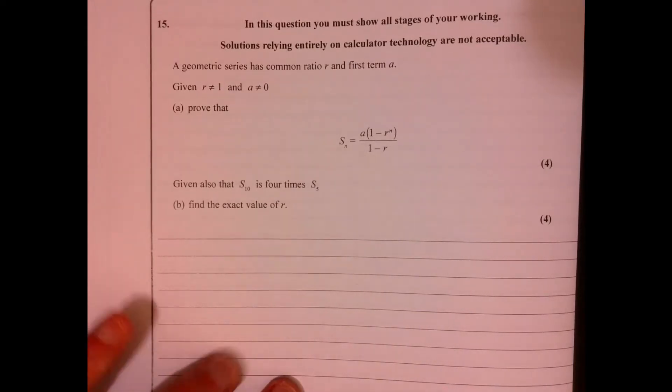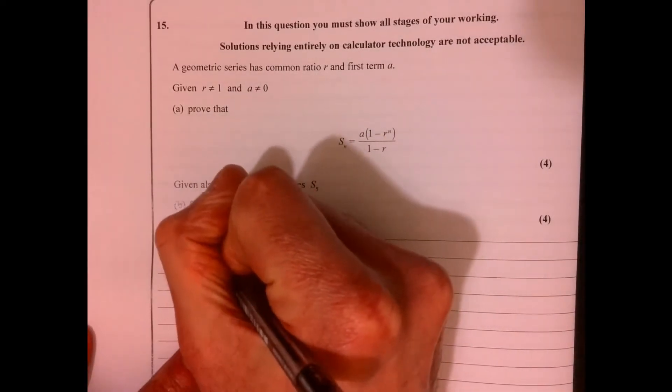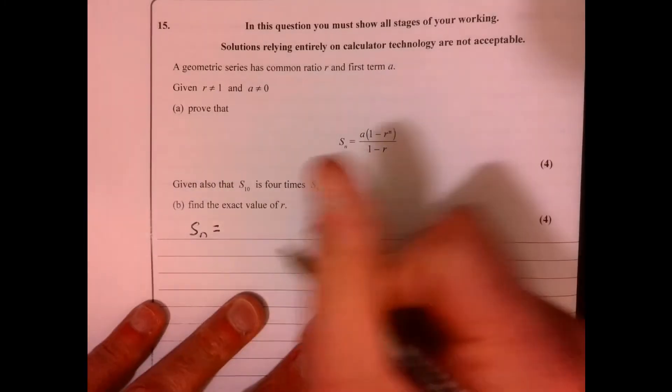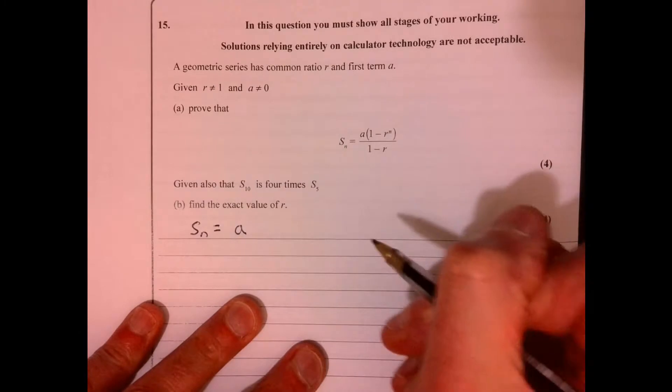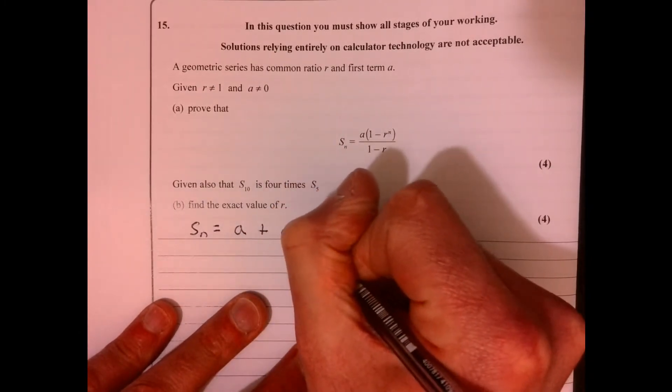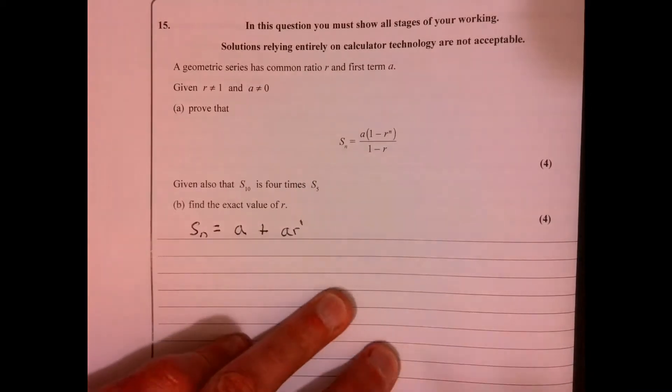Okay, question 15. So let's start off by saying, well, what does this really mean? Okay, so the first term is a, then you would add the second one, which would be times r